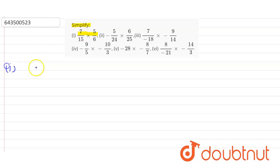They gave us the number 7 by 15 multiply with 5 by 6. So here first we have to see if we can cancel or simplify any of the digits. So here 15 is divided by 5 three times.